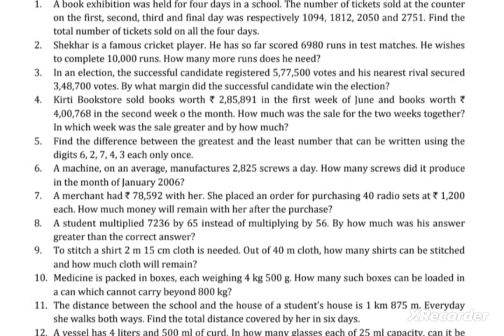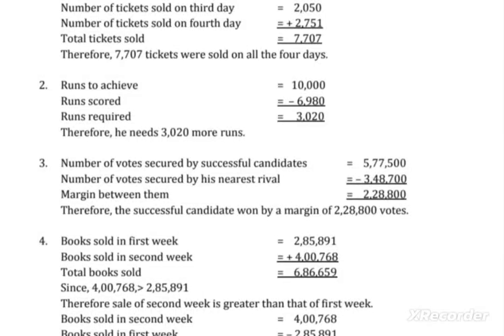Let's start the first question. A book exhibition was held in school for 4 days and the number of tickets sold: on the first day it was 1094, second day it was 1812, third day was 2050, and the final day was 2751. You have to find the total number of tickets sold in 4 days. Write down the number of tickets sold on each day and add all four numbers.